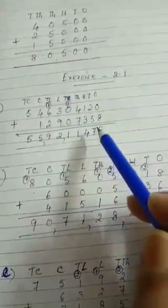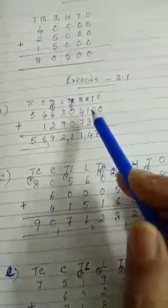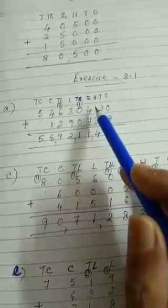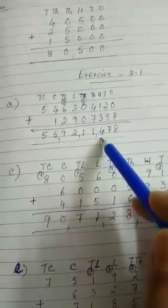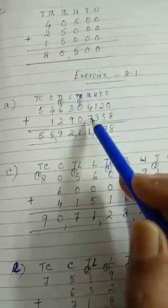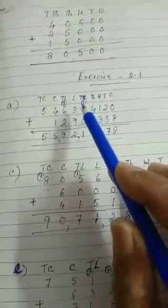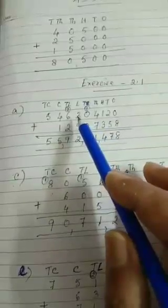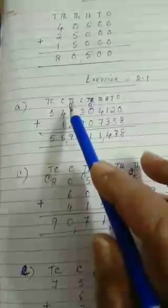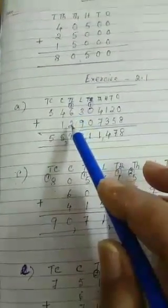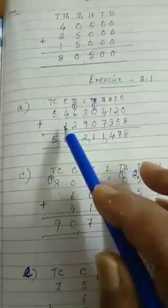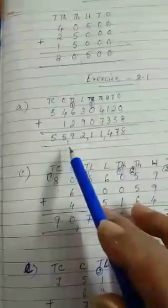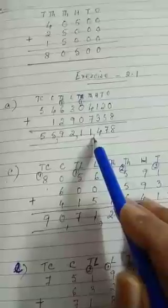Now start adding column wise. First column you add, ones column, that is 0 plus 8 equals 8. Second column 2 plus 5 equals 7. Third column, hundreds column, 1 plus 3 equals 4. Then thousands column 4 plus 7 equals 11, write 1 carry 1. So 1 plus 0 plus 0 equals 1. Then the next column 3 plus 9 is 12, so write 2 carry 1. So the next column, 1 plus 6 plus 2 equals 9. Next column 4 plus 1 is 5. And the last column you write 5. So ultimately your total comes 55 crores 92 lakhs 11,478.